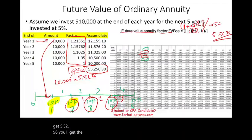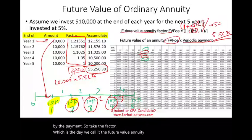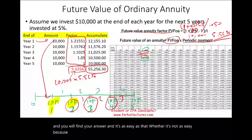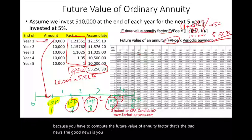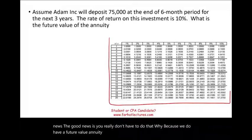All you have to do is take the factor and multiply it by the payment. We call it the future value annuity factor — multiply it by 10,000 and you will find your answer. It's as easy as that. Well, you have to compute the future value annuity factor — that's the bad news. The good news is you really don't have to, because we have a future value annuity table.